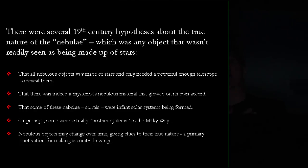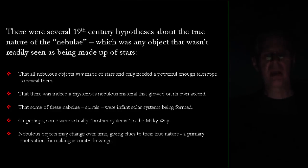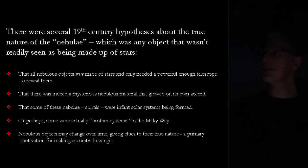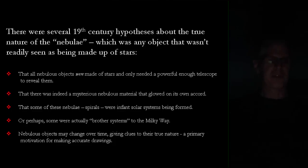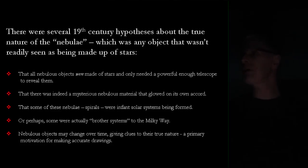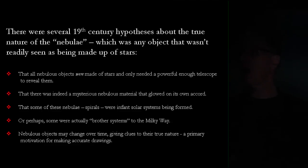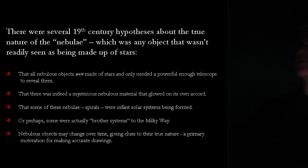As historical background: there were several hypotheses in the 19th century about the nature of nebulae. At that point, there was no such term as galaxies — just fuzzy things in the eyepiece that weren't obviously made of stars. The prevailing view was that nebulous objects were made up of stars, and with a big enough telescope you could resolve them. That had been the history of astronomy — nebulous objects gradually became resolved into stars, like the Milky Way resolved by Galileo.